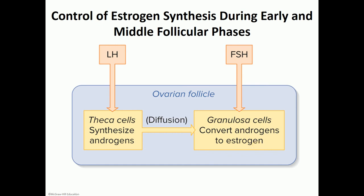Let's talk about the control of estrogen synthesis during the early and middle follicular phases. Luteinizing hormone stimulates the theca cells to make androgens. Those androgens, by diffusion, will reach the inner granulosa cells, which will be stimulated by FSH to convert androgens through the action of aromatase enzyme into estrogen.